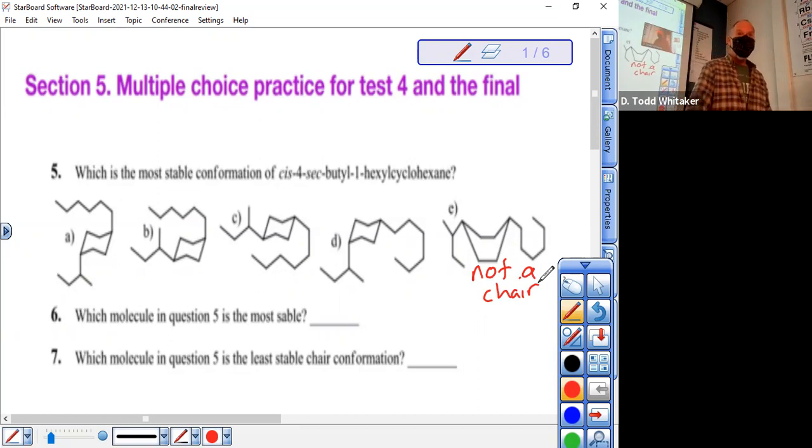Not a chair, so don't pick that one to be the most stable. And some of them are trans, so don't pick those for the first question. Up and down is trans.